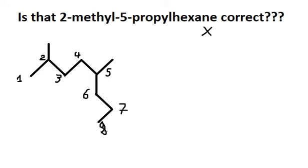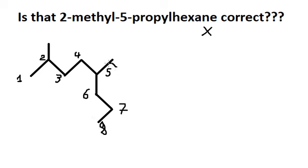So if we go from here, the number is too big. But if we go from this direction, the total number reaches 8 and the chain is smaller. So the main chain has 8 carbons — that is octane.